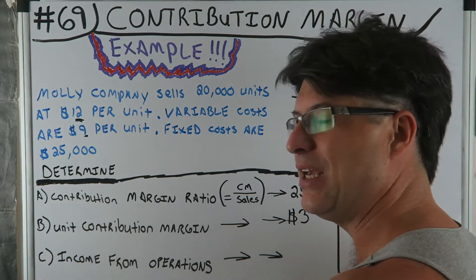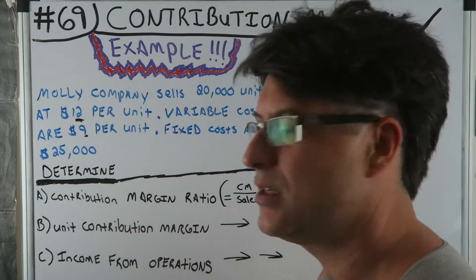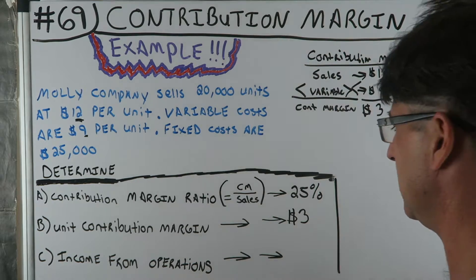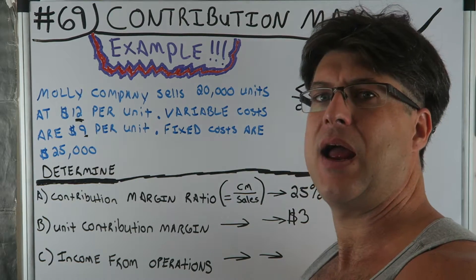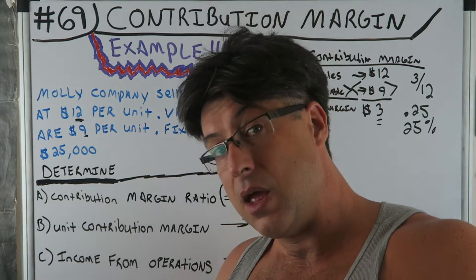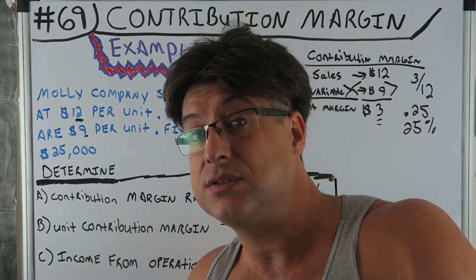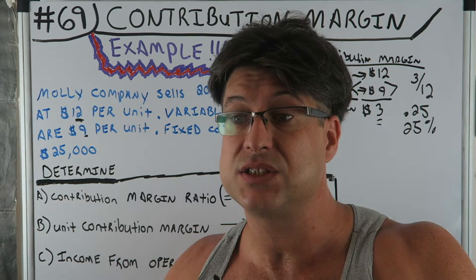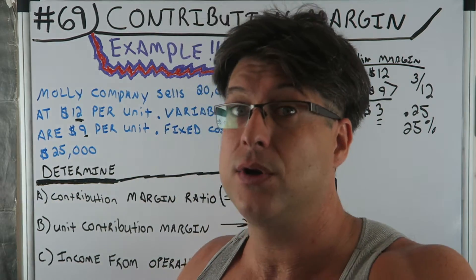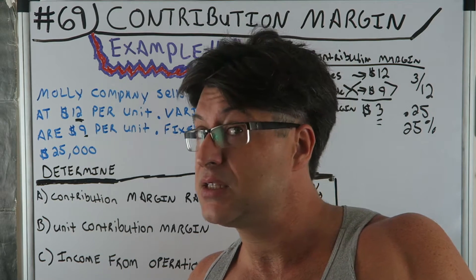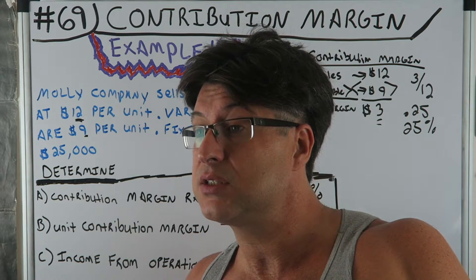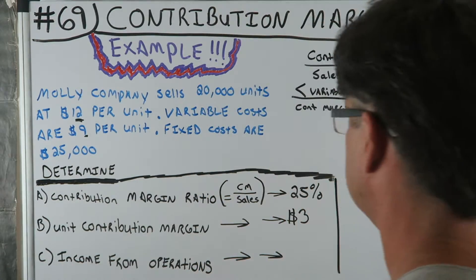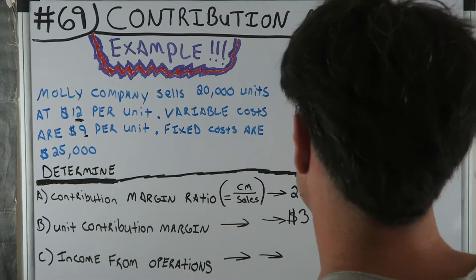Now for part C — income from operations. How do we figure out income? It's the sales, the revenue coming in, minus your costs going out. So: sales minus variable costs minus fixed costs — that's how we get income from operations.